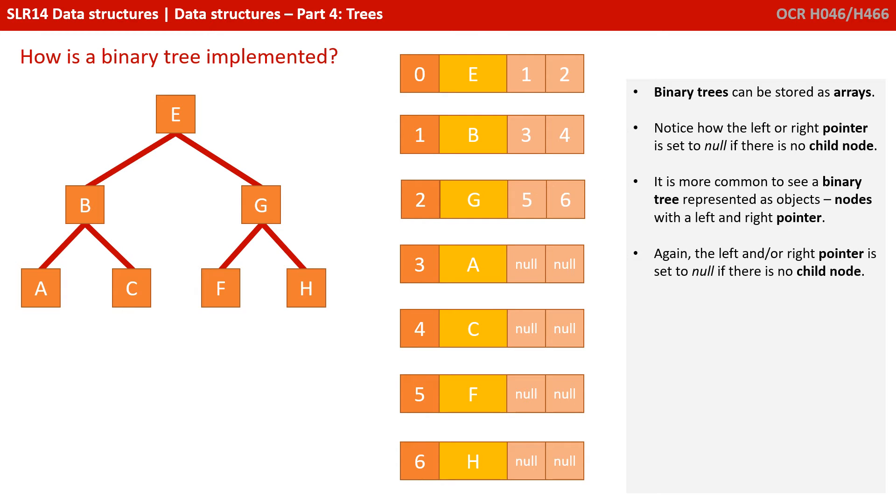It's more common to see binary trees represented as objects, nodes with a left and right pointer. Again, the left and or right pointer is set to null if there's no child node.